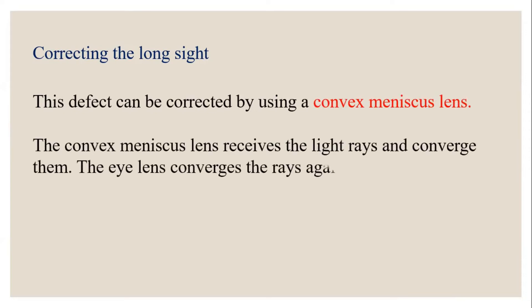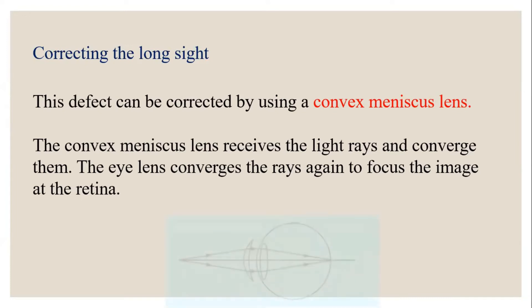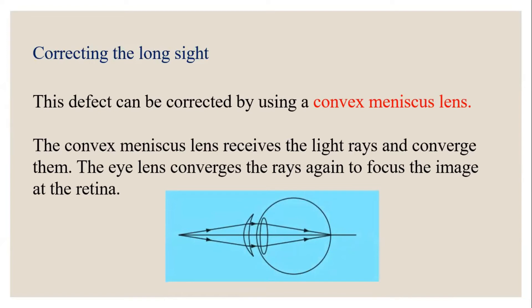The convex meniscus lens receives the light rays and converges them — converge means to collect them. The eye lens then converges the rays again to focus the image at the retina, so after wearing the convex meniscus lens, nearby objects can be seen clearly. Meniscus lenses are the lenses used in spectacles, so we call it a convex meniscus lens.